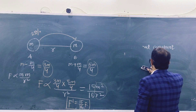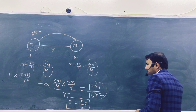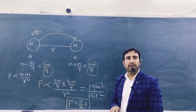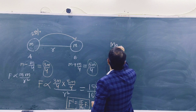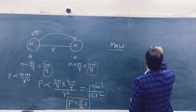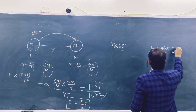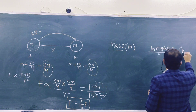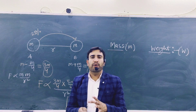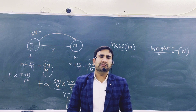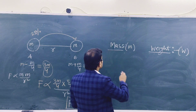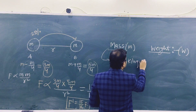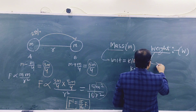Now let us discuss what is capital G and what is small g. But before explaining that, let me first explain what is mass and what is weight. Mass is denoted by m and weight is generally denoted by W. Mass unit is kilogram (kg).